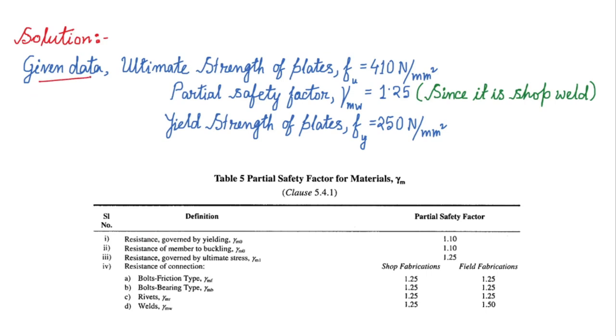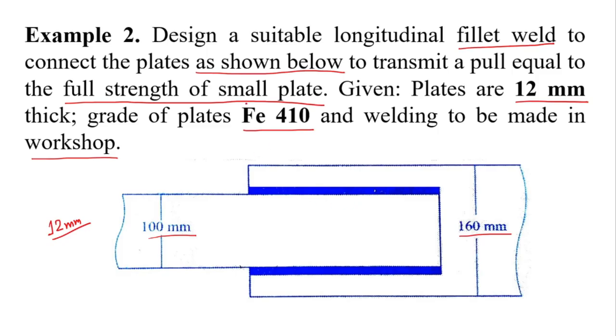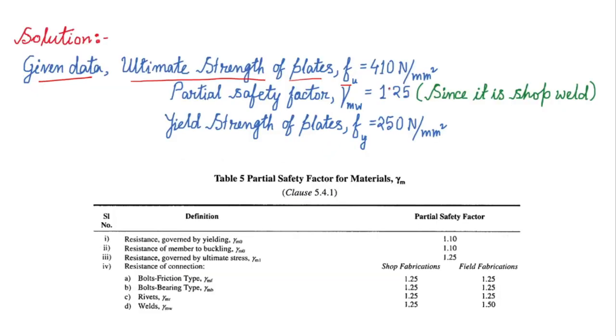First of all, I have written the given data. Ultimate strength of plates Fu, as the grade of the plate is 410, so ultimate strength of the plate is 410 newton per mm square.